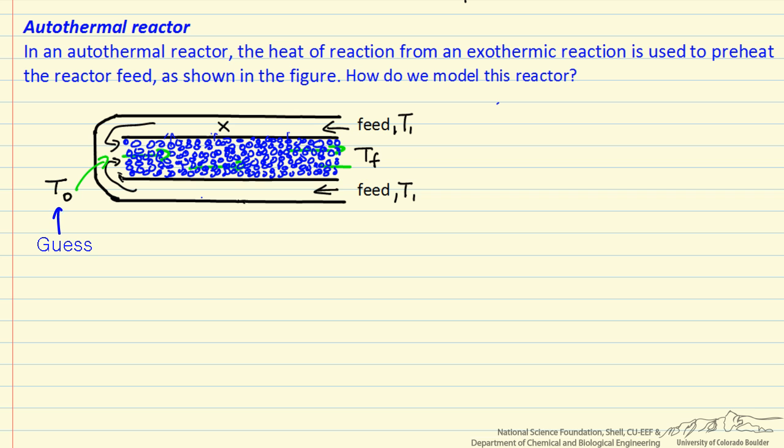So what we're going to do is guess T0, and then calculate T final and T1. If we guess the correct value, we will end up with the T1 value that we already knew. If we guess the incorrect value, then we're going to iterate until we get back our initial starting value. So we want to go through what the equations are and what this procedure is. There's a couple things we have to be careful about, and we're going to look at the case for an A goes to B reaction that's first order and gas phase.